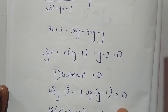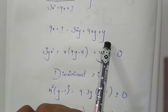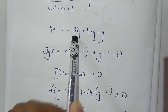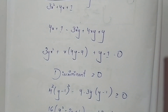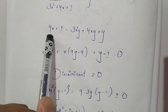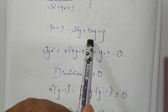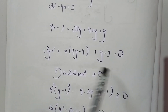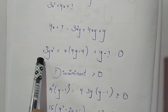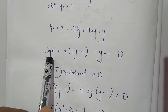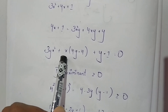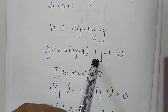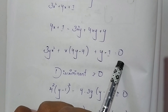On solving this, we will get a quadratic expression: 3y·x² + (4y - 4)·x + (y - 1) = 0.